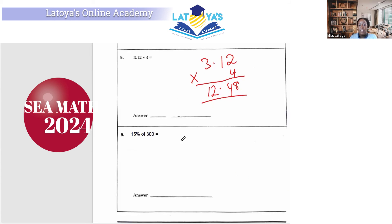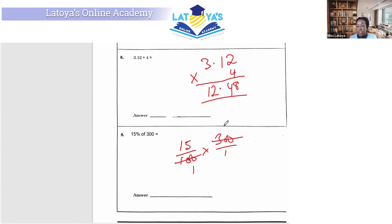Question 9 wants us to find 15% of 300. When we are multiplying, we look for opportunities to reduce. So 100 into 100 is 1, 100 into 300 is 3, 15 times 3 is 45.